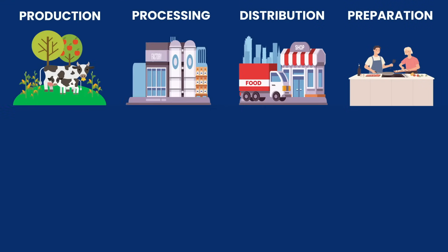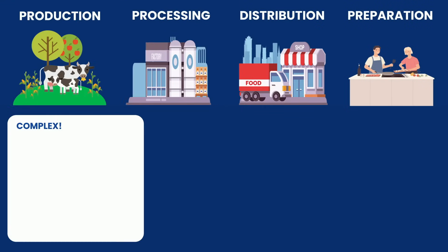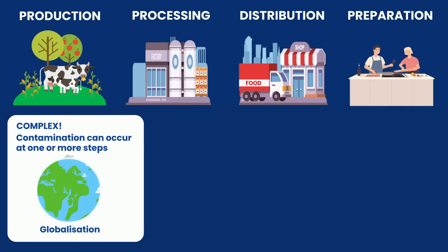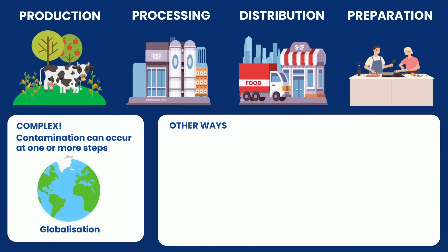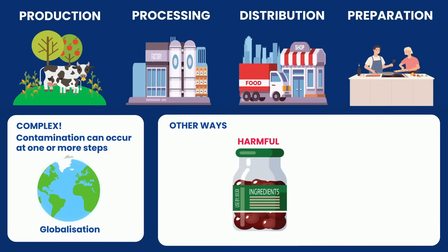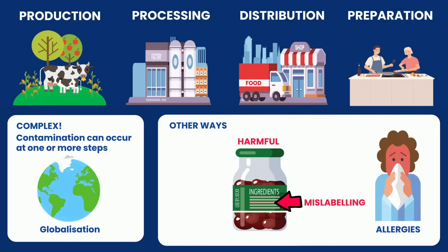The food supply chain can be quite complex, and contamination can happen at any number of points in this chain. Adding to the complexity is increased globalization, which means that food may contain ingredients sourced from many different countries. Besides contamination, other ways that food could be potentially harmful are if it is not labeled properly — a concern for people with food allergies — or from consuming food past its expiry date.